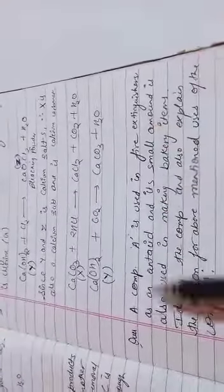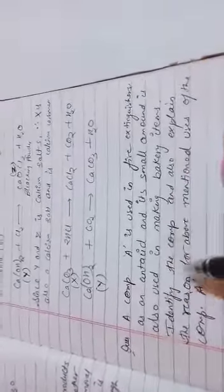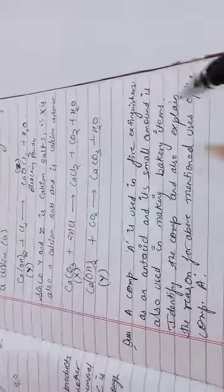A compound A is used in fire extinguishers as an antacid, and its small amount is also used in making bakery items. Identify the compound and also explain the reason for above mentioned uses of compound A. Thank you.